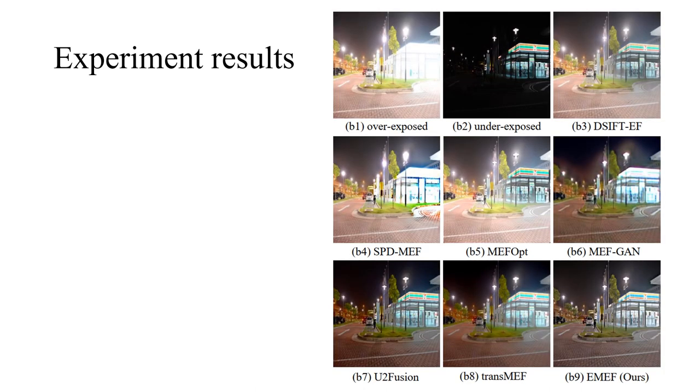In sample B, the goal is to provide appropriate exposure for the streetlights, the store, and the floor. The SIFT-F, SPD MEF, MEF OPT, and MEFGAN failed to achieve this goal, as terrible halo artifacts surround the streetlights and the store. Our method produces more appealing luminance in the left part of the fused image than U2 Fusion. When compared with TRANS-MEF, our method generates far finer details in the store and the floor regions.